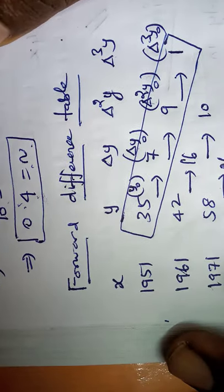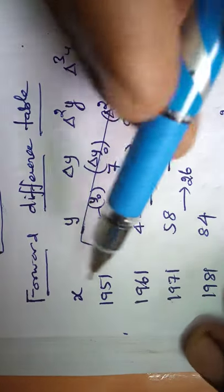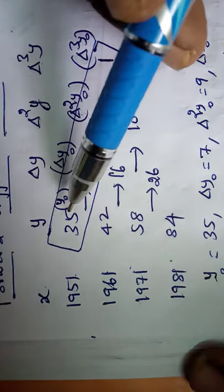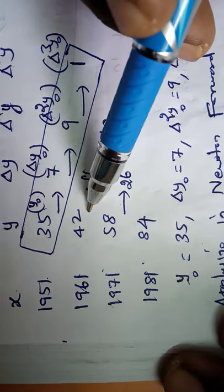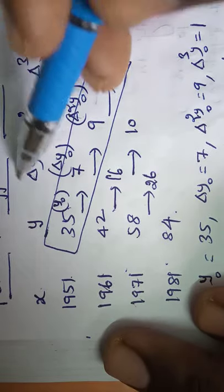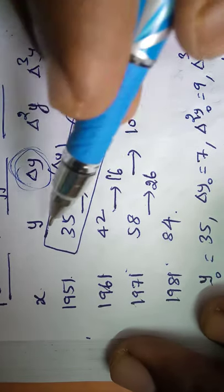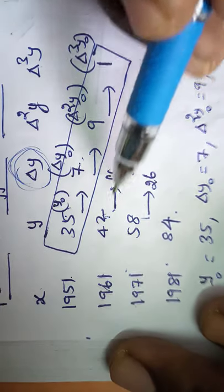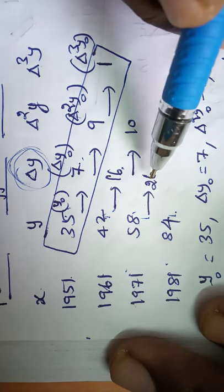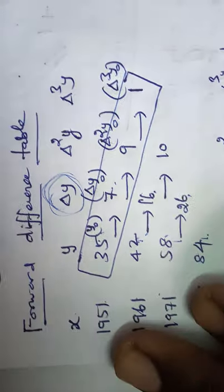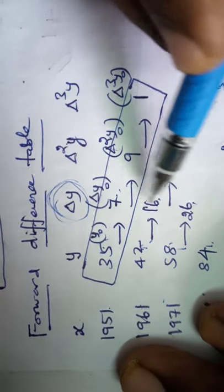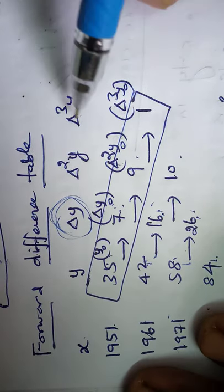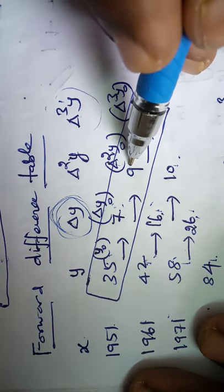Now we form the forward difference table. The x entries are 1951, 1961, 1971, 1981, and y entries are 35, 42, 58, 84. First differences (Δy): 42 − 35 = 7, 58 − 42 = 16, 84 − 58 = 26. Second differences (Δ²y): 16 − 7 = 9, 26 − 16 = 10. Third difference (Δ³y): 10 − 9 = 1. The leading elements are: y₀ = 35, Δy₀ = 7, Δ²y₀ = 9, Δ³y₀ = 1.